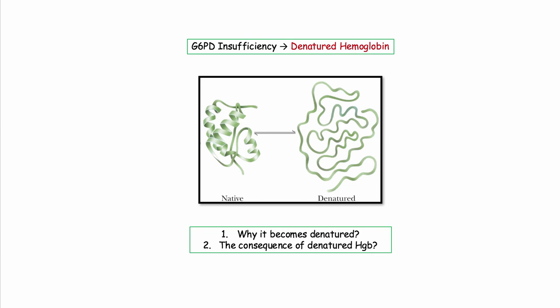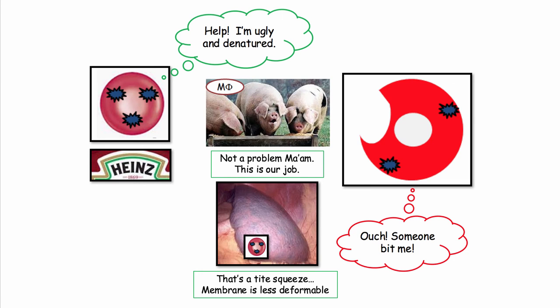The consequence of denatured hemoglobin: splenic macrophages, which are indiscriminate eaters, love Heinz bodies. The classic bite cell results from the macrophage literally taking a bite out of the RBC trying to remove the Heinz body. An additional mechanism of hemolysis relates to the lack of deformability of RBCs squeezing through splenic sinusoids. RBCs with Heinz bodies are also unstable and capable of hemolyzing in the intravascular space.